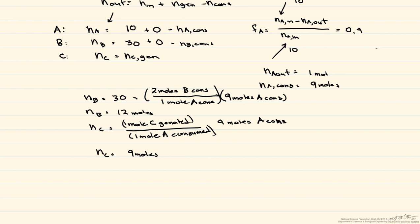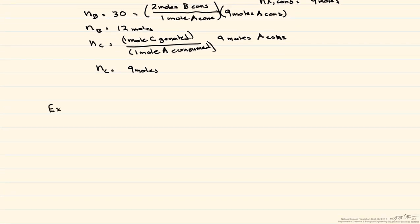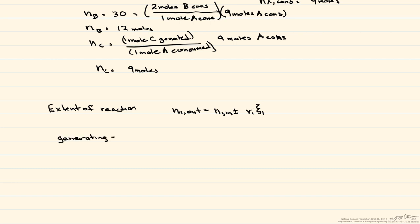This is the molecular species balance method — it's easiest to use for a single reaction. Next, we use the extent of reaction. The expression is: the number of moles of species i out equals the number of moles of species i in, plus or minus the stoichiometric coefficient of i times the extent of reaction ξ. If generating a product, this is positive; if consuming a reactant, it's negative.